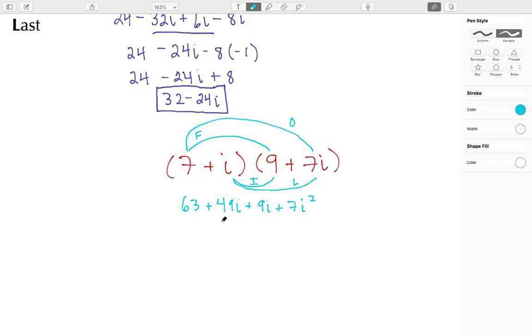All right, we're going to work on these middle terms here. Well, 49i plus 9i, well that's going to give me 58i.